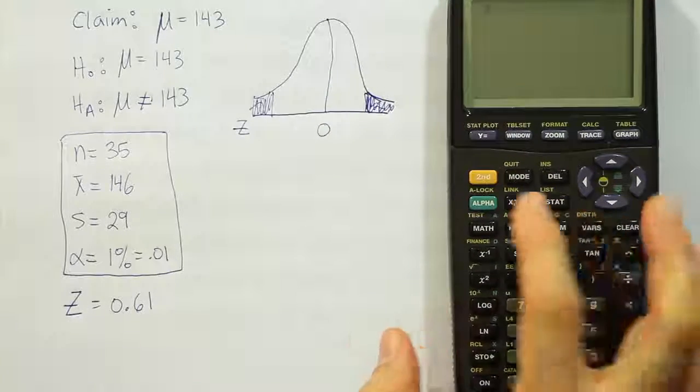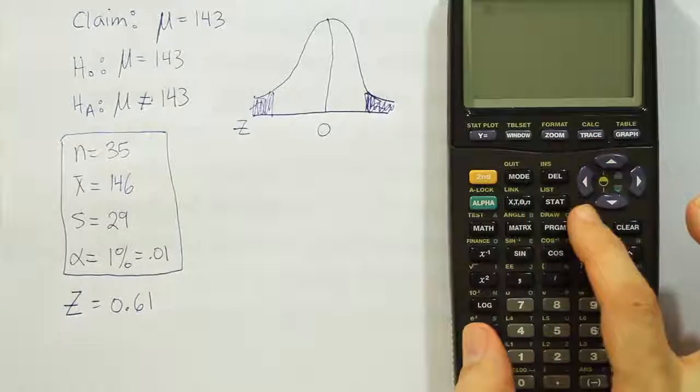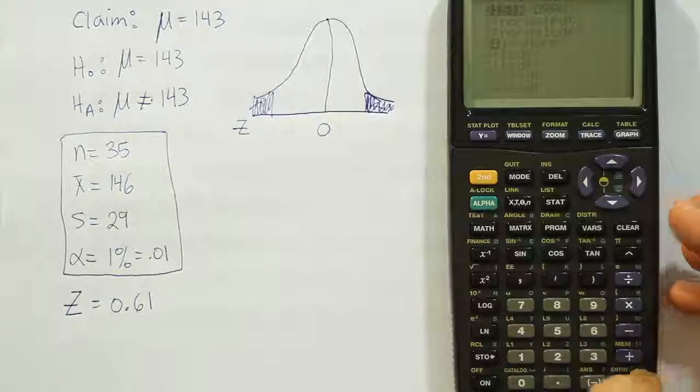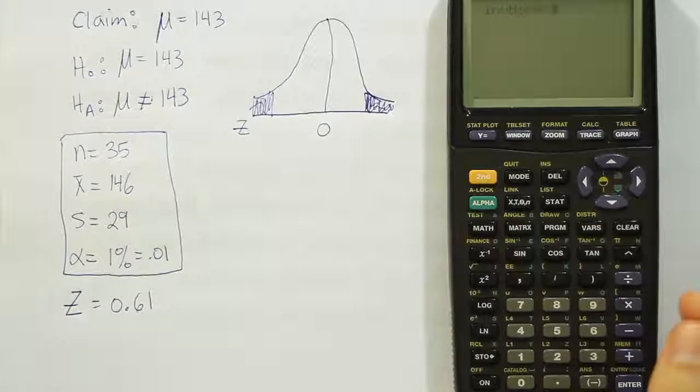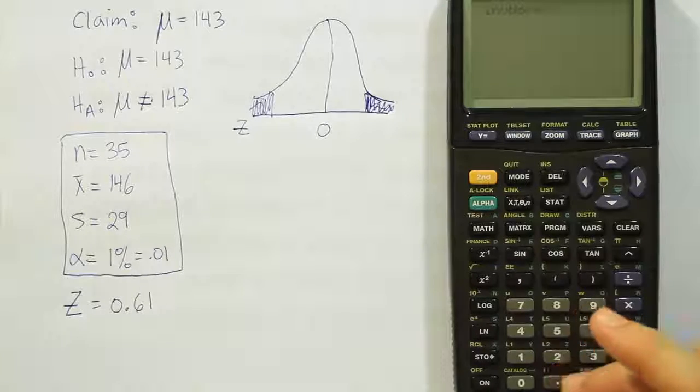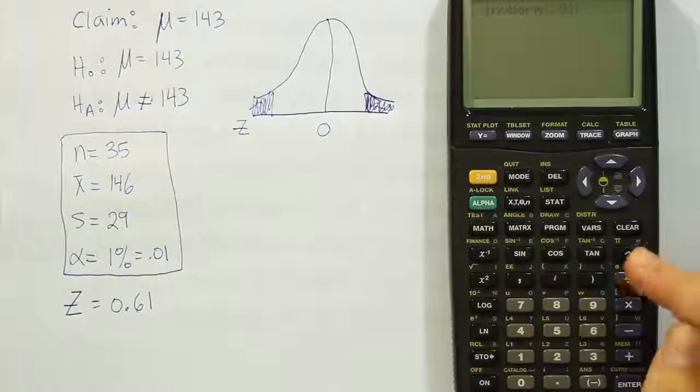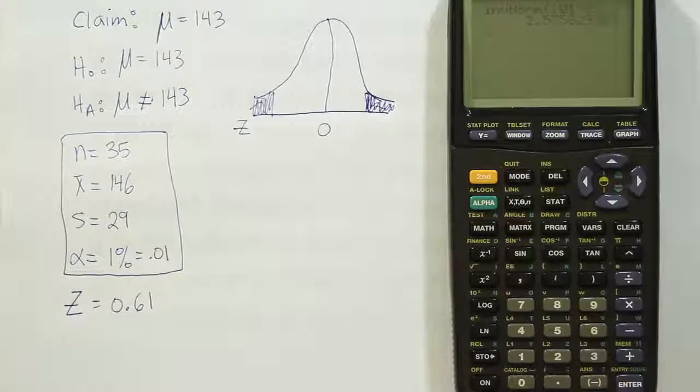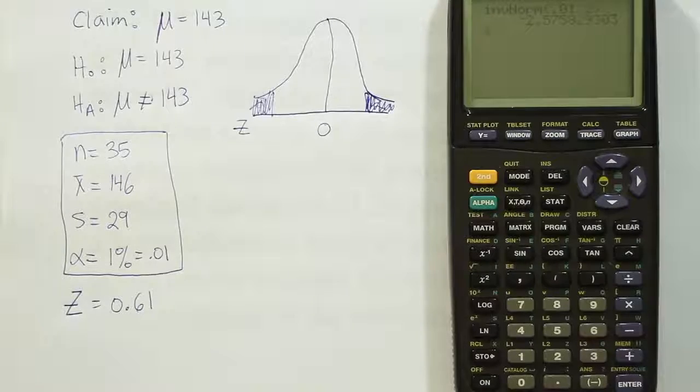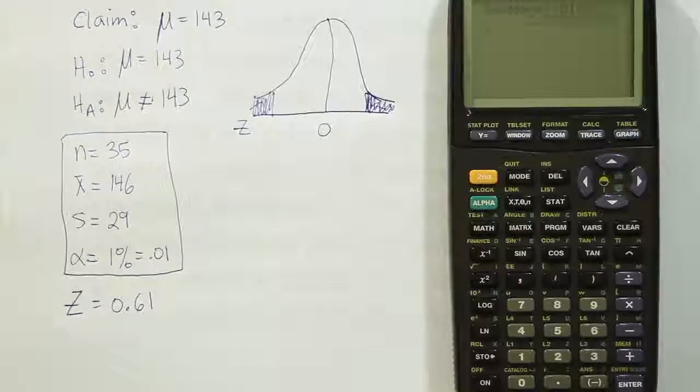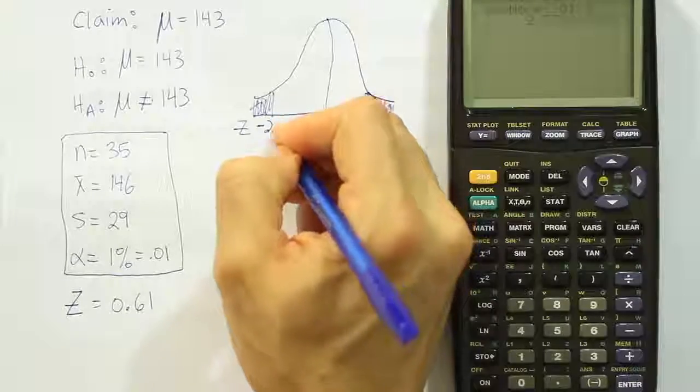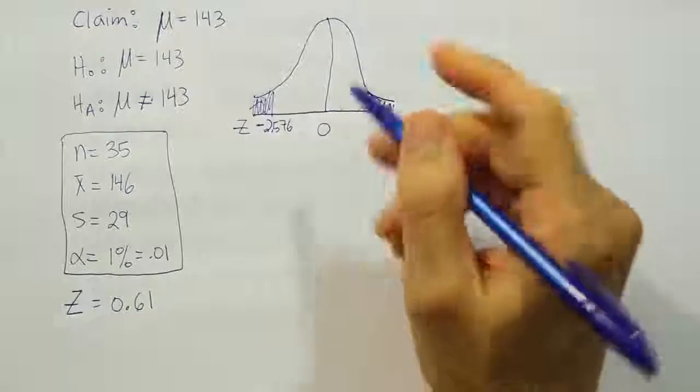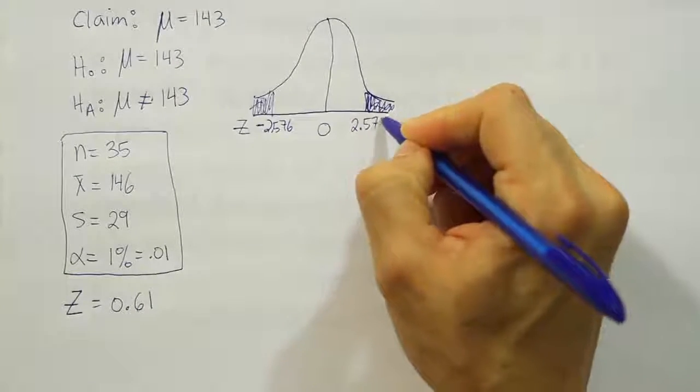So the way we're going to do that is we're going to hit the SECOND button. We're going to hit the VARS option. So second and then the VARS button. And then go down to option three where it says inverse normal. And then from there you're going to type in the alpha, 0.01, and you're going to divide it by two because of the two-tailed test. And when you do that, you get negative 2.576. However, we also have the positive version on the other side, which would be 2.576.